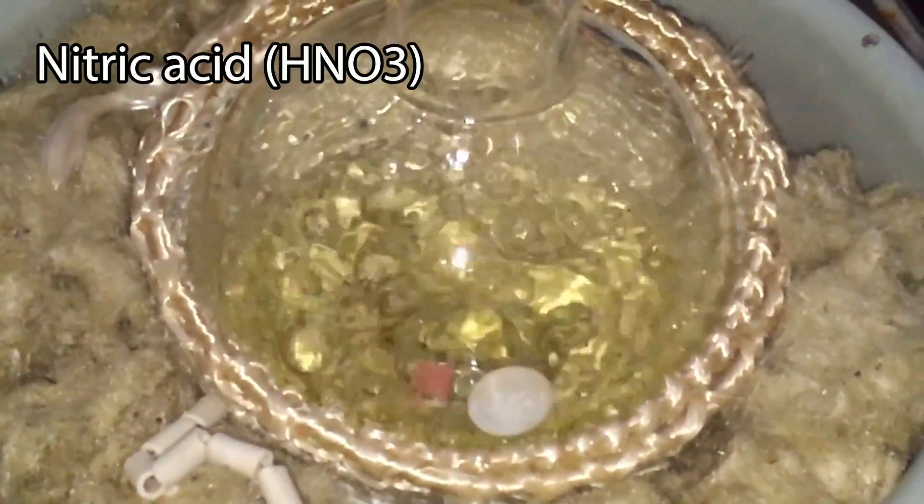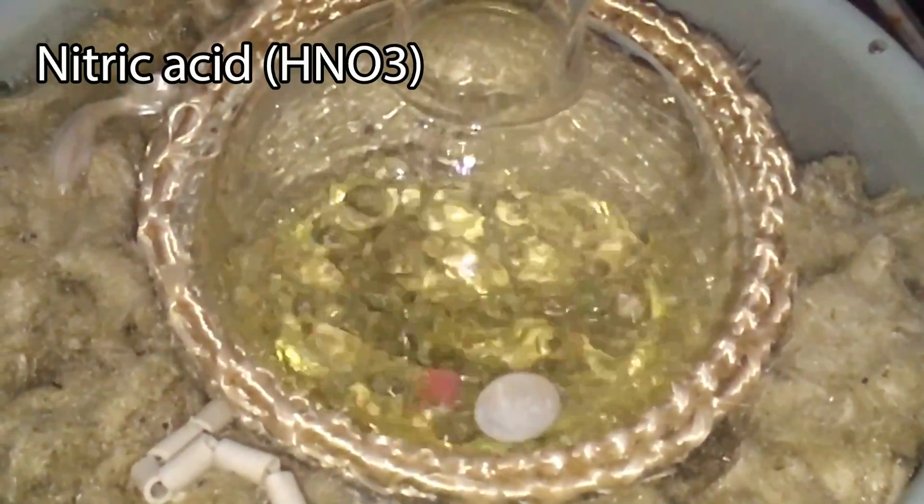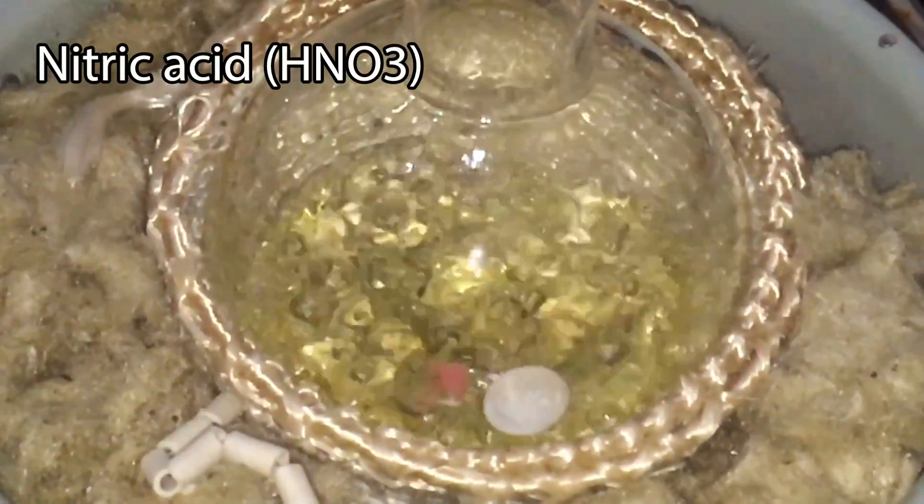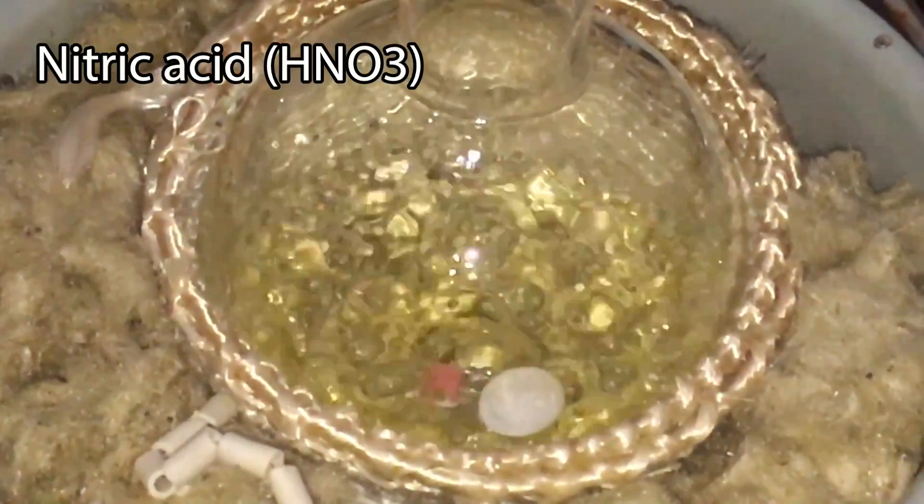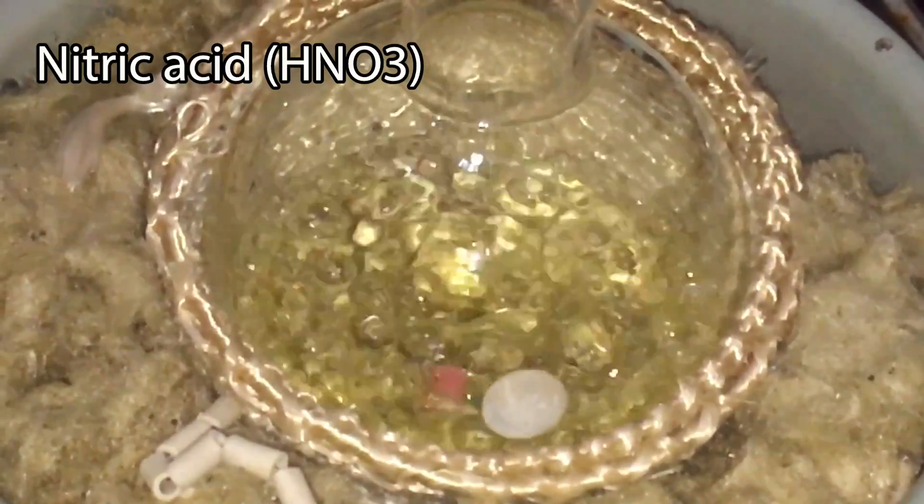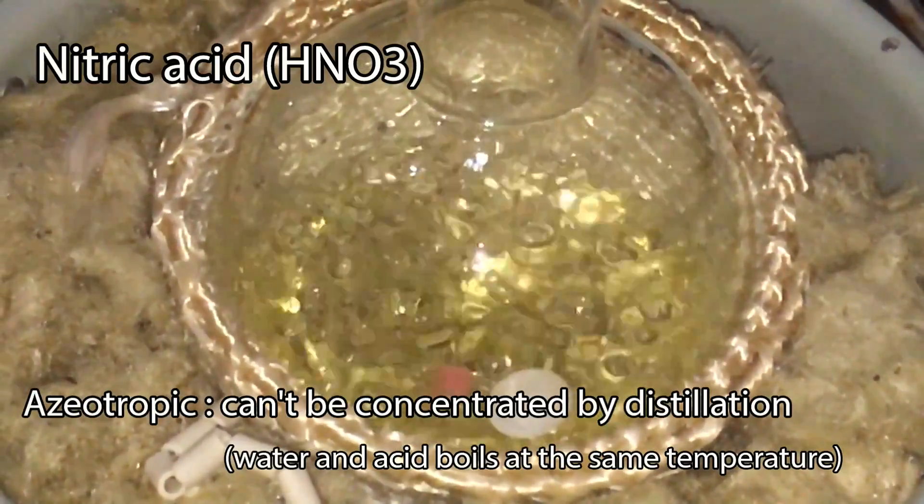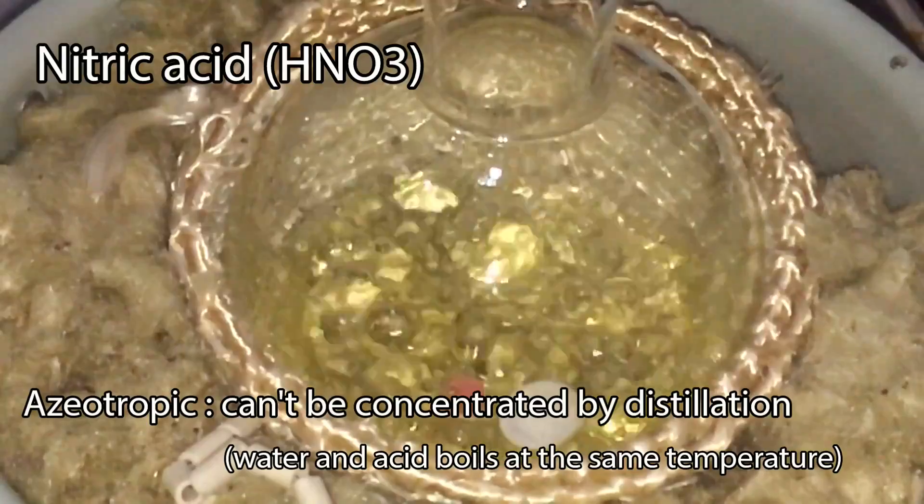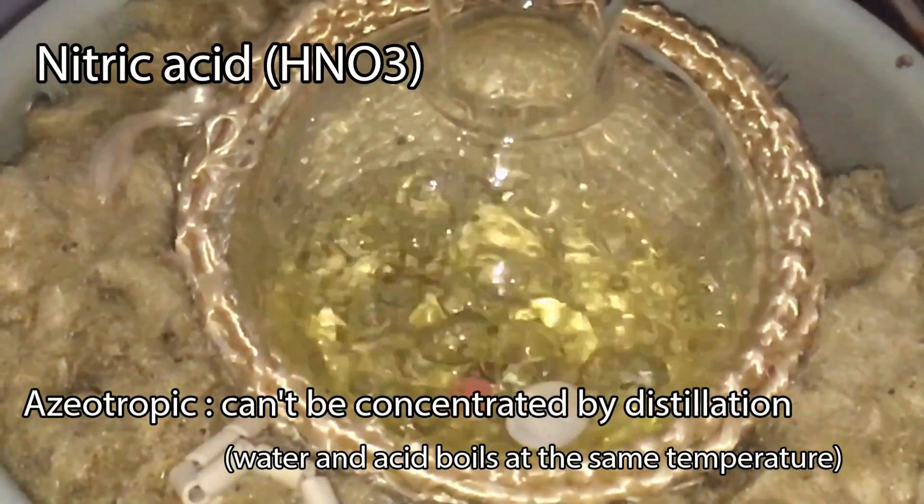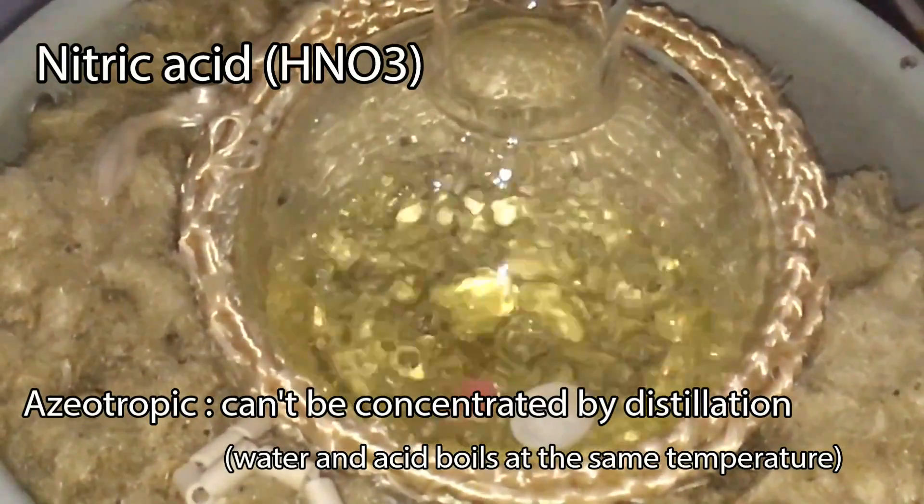The nitric acid we are going to make today is the azeotropic one, which means you cannot increase its concentration any more by distillation. I will show you how to make 100% nitric acid in a future video. With that being said, let's move on to the ingredients.